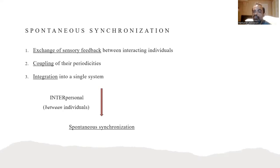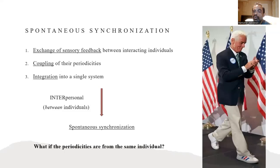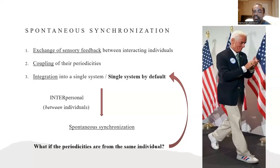Given that, here we ask the question: what if the periodicities were produced by the same individual, like this gentleman, for example, walking and clapping at the same time? As an individual, he's a single system by default. So does that mean coupling and exchange of sensory feedback are satisfied by default as prerequisites? If they are, then it would be reasonable, we thought, to expect spontaneous intrapersonal synchronization to occur within individuals.